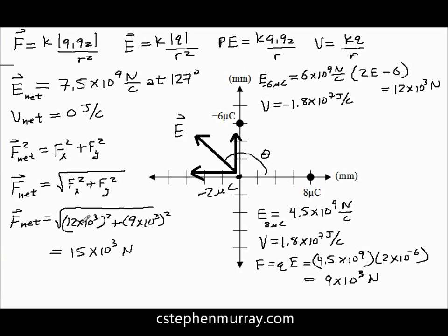It turns out to be 15 times 10 to the third Newtons. By the way, I would have just put 12 squared and 9 squared gives me 15 squared. Because if you think about the triangle, if all sides are 10 to the third, the hypotenuse had better be 10 to the third. Did you see how this is 3 times 4, 3 times 3, and this is 3 times 5? This is just a 3-4-5 triangle.